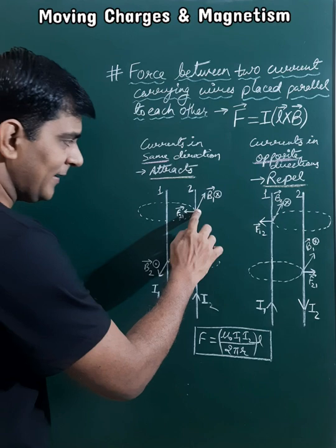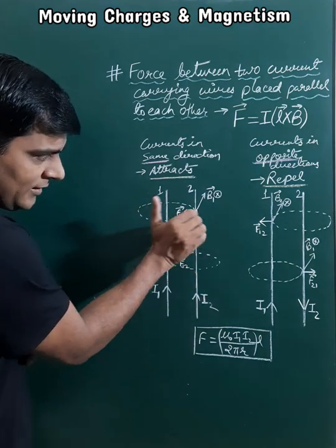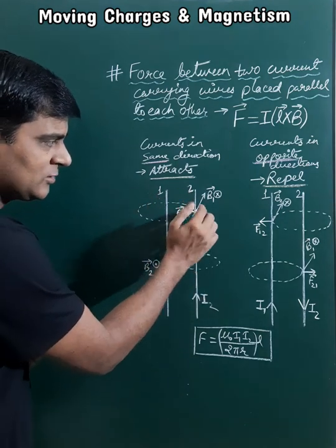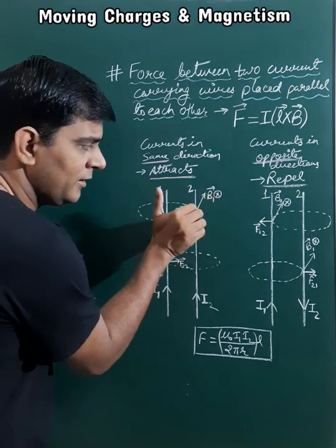The direction of magnetic field at this point due to this current I1, then according to right hand thumb rule, this direction of magnetic field will be perpendicular inward.